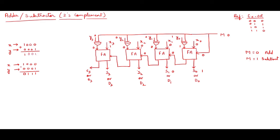Continuing: 0 plus 0 plus 0 is 0, carry is 0. Then 0 plus 1 plus 0 is 1, carry is 0. So the answer is 1001, which is 9. It is working as an adder circuit.